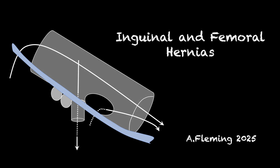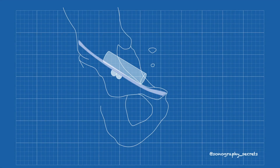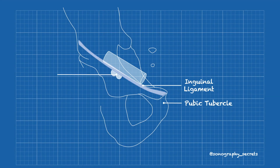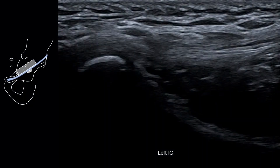The key to ultrasound of inguinal hernias is in the identification of landmarks. If we cannot identify these specific landmarks, we cannot identify the inguinal canal, and if we cannot identify the inguinal canal, we cannot identify an inguinal hernia.